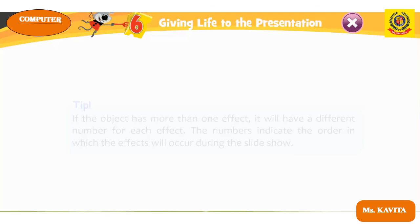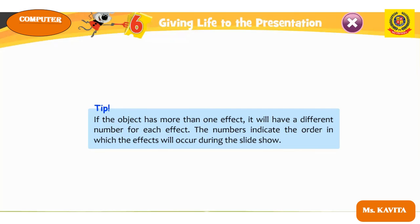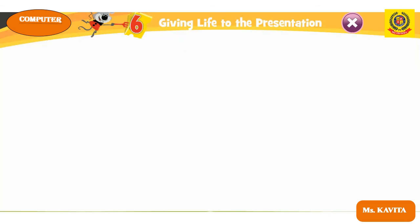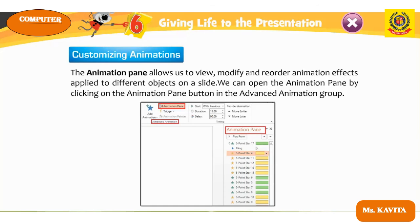If an object has more than one effect, it will have a different number for each effect, indicating the order in which they occur during the slideshow. The Animation Pane allows us to view, modify, and reorder animation effects applied to different objects on a slide. Open the Animation Pane by clicking the Animation Pane button in the Advanced Animation group.